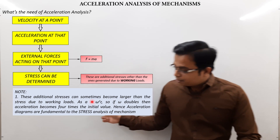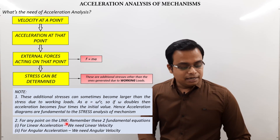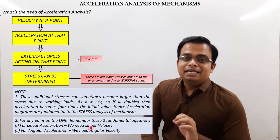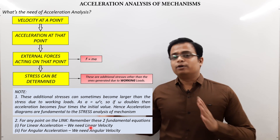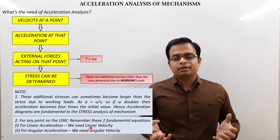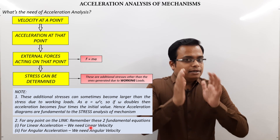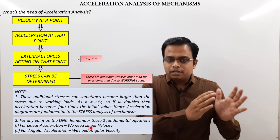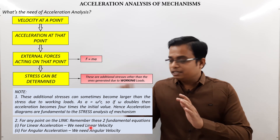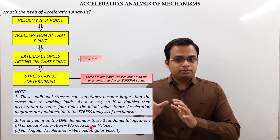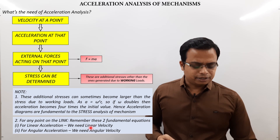Two important points to remember: for linear velocity you need position, and for linear acceleration you need linear velocity. Similarly, for angular acceleration — denoted by alpha — you need angular velocity omega. These relationships are quite fundamental whether you're a student of math, physics, or just a science enthusiast.